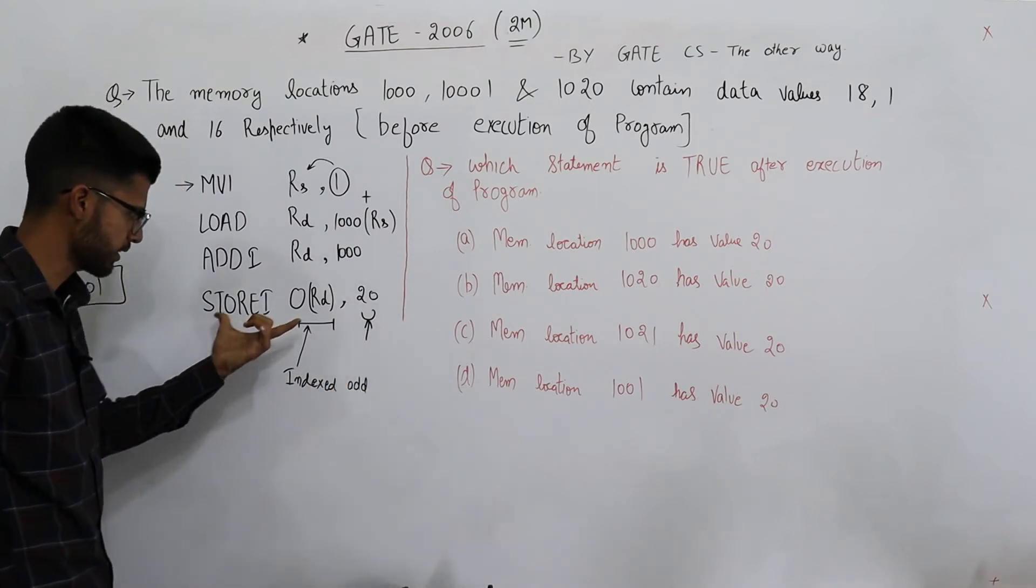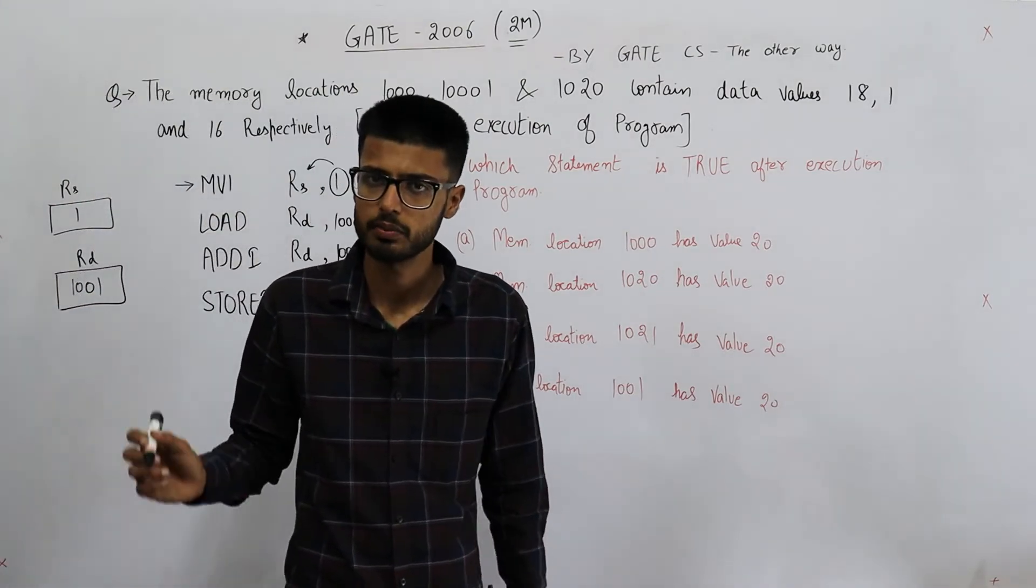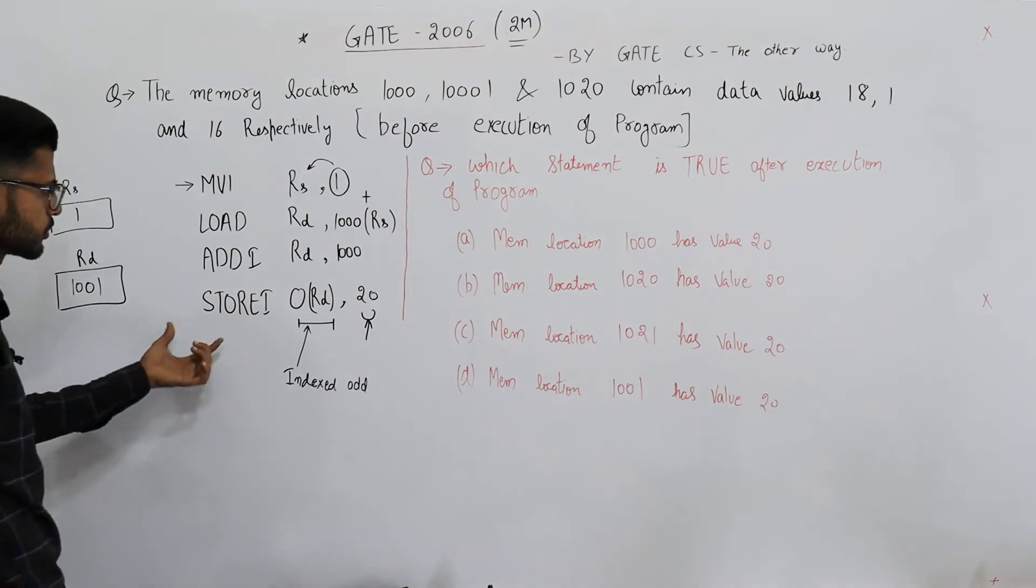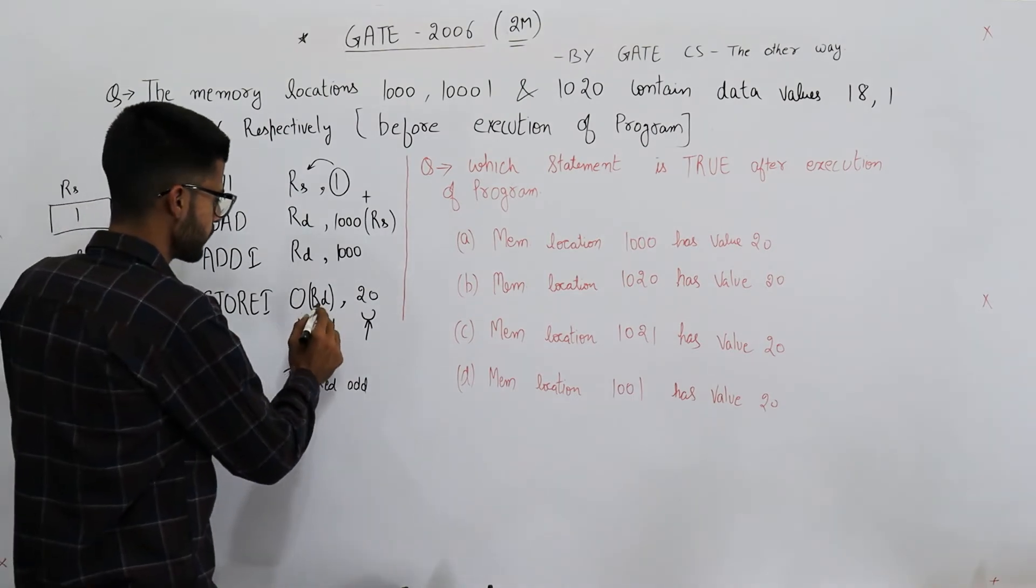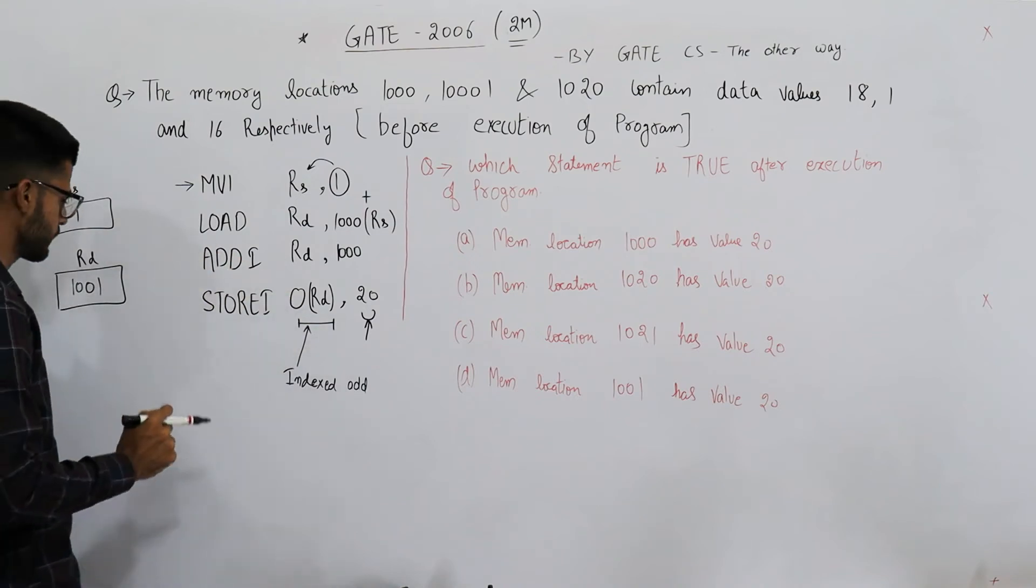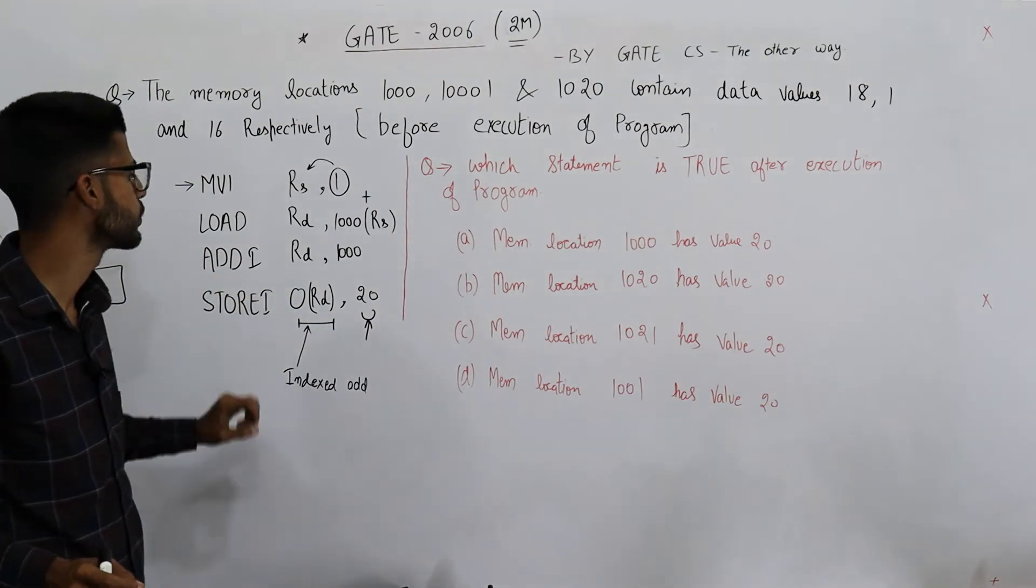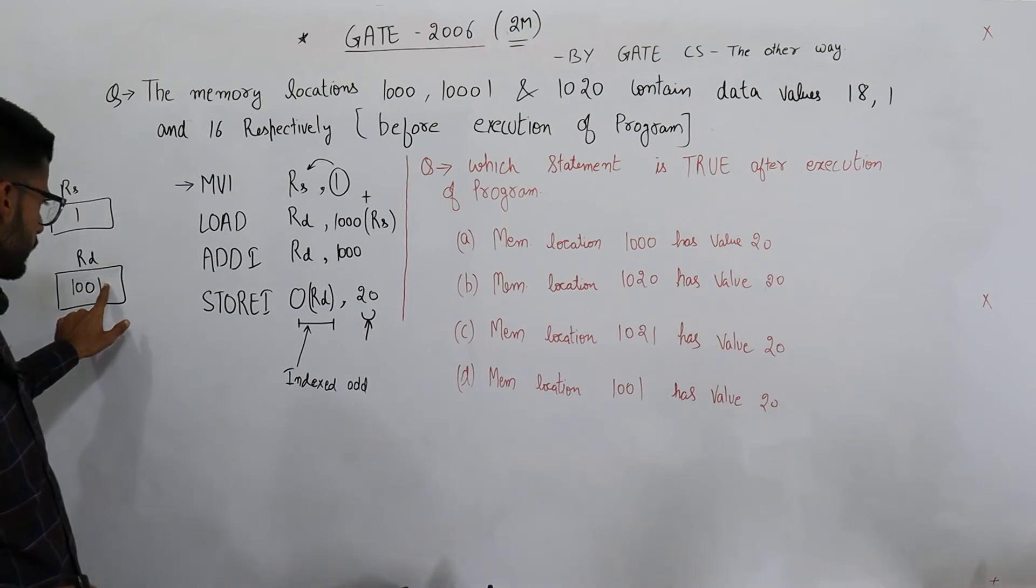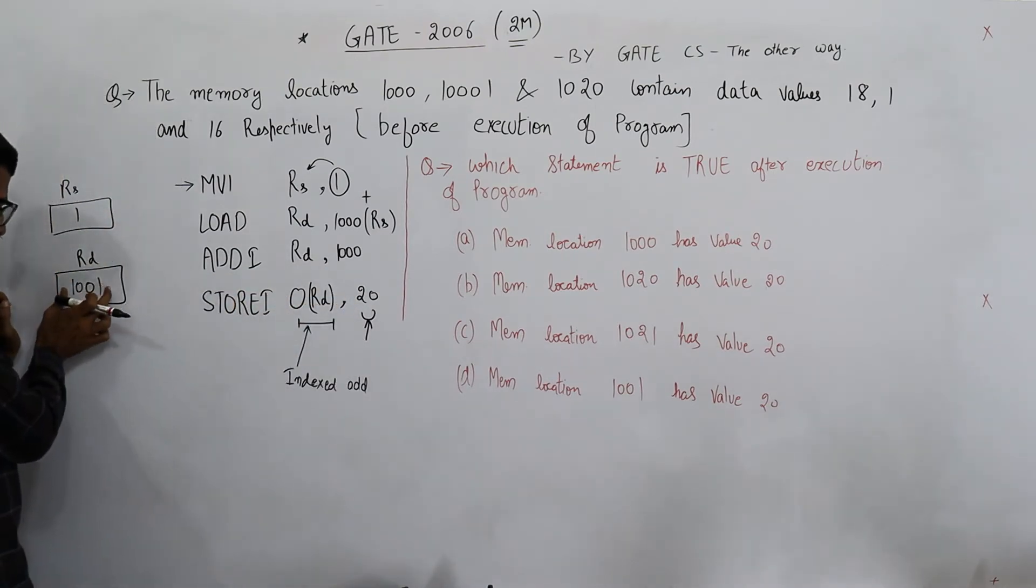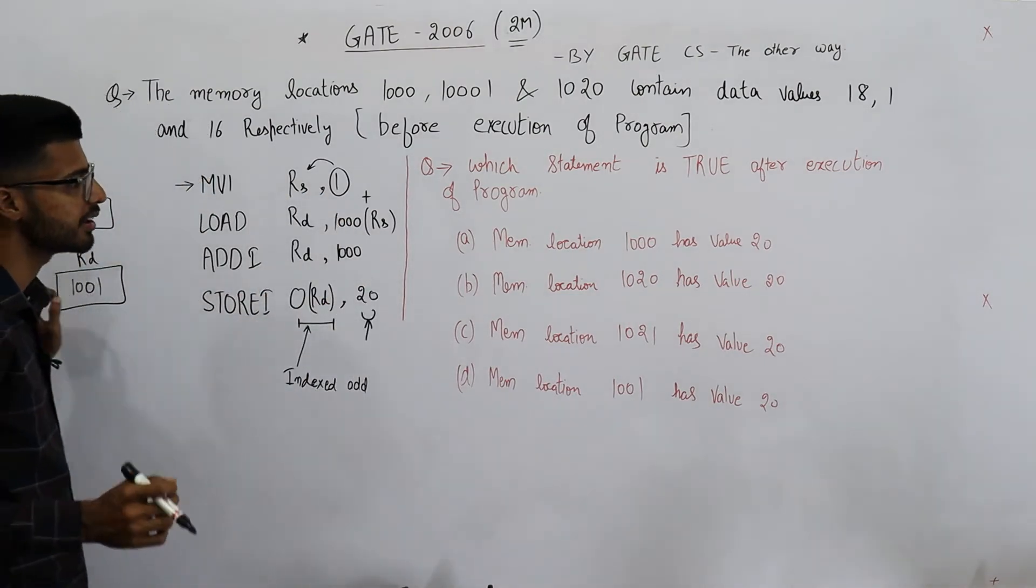Let's move ahead: store immediate 20, 0 plus Rd. First of all, Rd contains 1001. Zero plus 1001 means 1001. So what this instruction is trying to do - into this memory location, you save this data 20. So into the memory location 1001 we need to save 20. That means memory location 1001 contains 20.